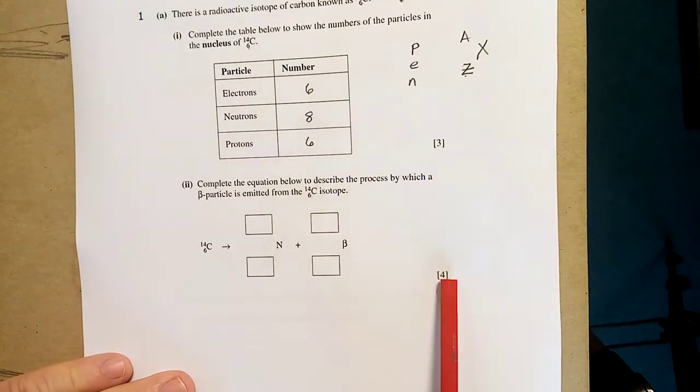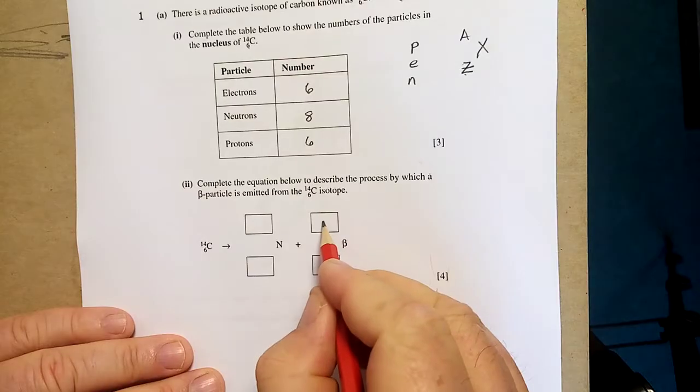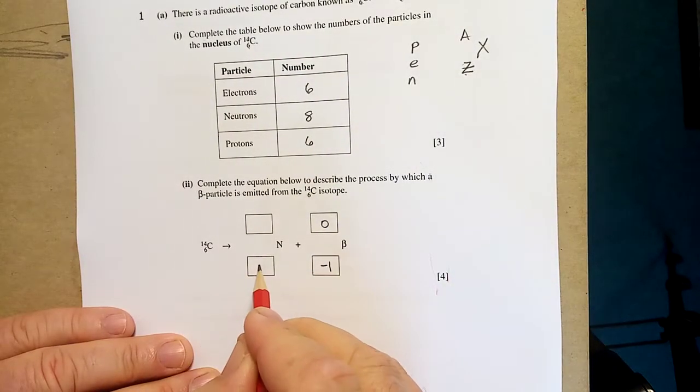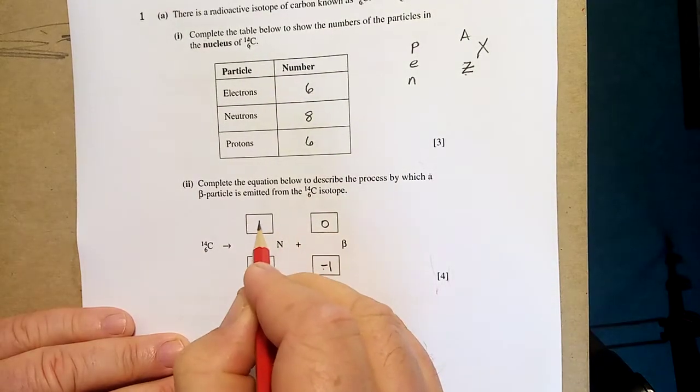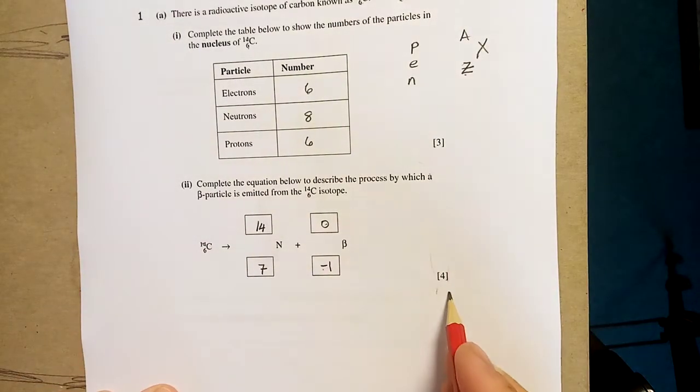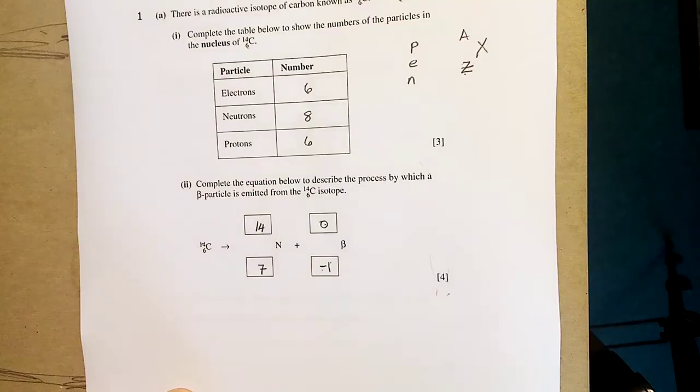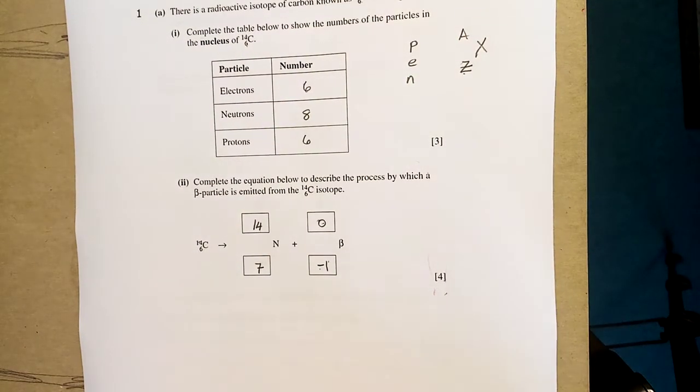Now, look at this. Four marks. There's ten marks in the first question. Beta particle. Remember, it's e minus one, not E minus one. That's six. So that must be seven. Seven and minus one gives you six. And that must be fourteen. Fourteen and nothing gives you fourteen. Four marks for that. One, two, three, four. If you don't know the symbols for alpha, beta, and gamma, you're in trouble.